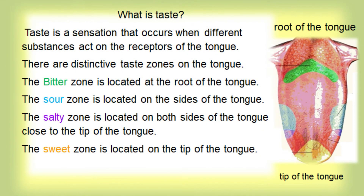What is taste? Taste is a sensation that occurs when different substances act on the receptors of the tongue. There are distinctive taste zones on the tongue. The bitter zone is located at the root of the tongue. The sour zone is located on the sides of the tongue. The salty zone is located on both sides of the tongue, close to the tip. The sweet zone is located on the tip of the tongue.